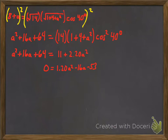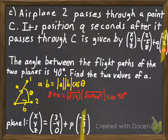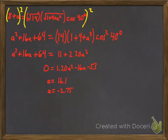Using the quadratic formula or a graphing calculator to solve 1.20a² - 16a - 53 = 0, we get two values to three significant figures: a = 16.1 and a = -2.75. Since a is a component of the velocity vector, it can be negative, so both values are valid. Those are the two values of a.